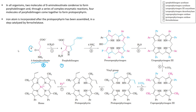If there are eight molecules of delta-aminolevulinate, they will form four molecules of porphobilinogen. These four molecules of porphobilinogen undergo deamination and come together to form pre-uroporphobilinogen, and this reaction is catalyzed by uroporphobilinogen synthase. Because it is a synthase, no ATP is required.